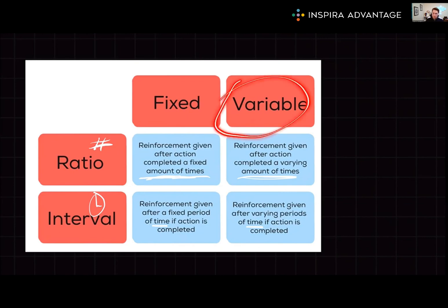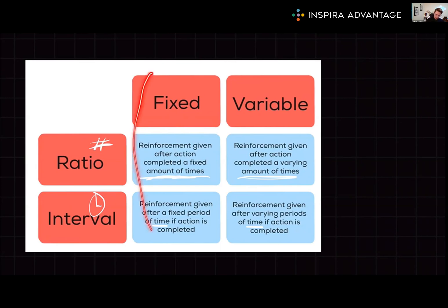Variable reinforcement schedules are especially effective at shaping behavior — much better than fixed schedules. In these schedules, rewards or punishments are given at varying intervals, making it difficult for the organism to predict when they will occur. This creates a sense of uncertainty that can be highly motivating, as the organism continues to engage in behavior hoping for a reward. With a fixed ratio, the organism expects it every time — for example, knowing that pecking three times will always produce something.